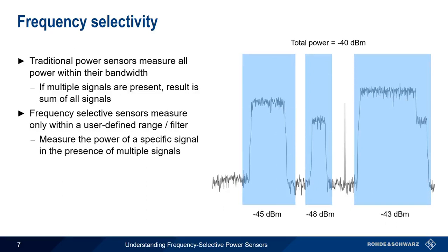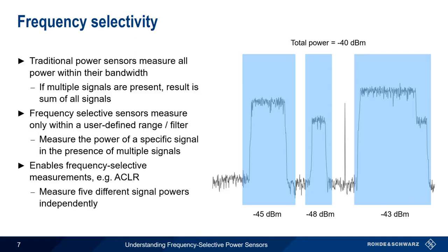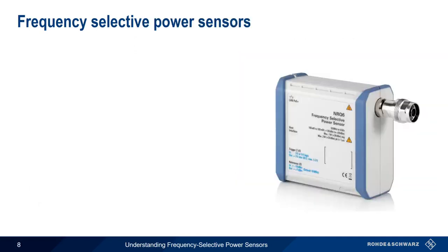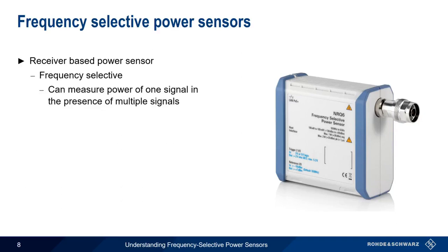Frequency selectivity also enables certain types of frequency selective measurements, such as ACLR, or the adjacent channel leakage ratio, since this measurement requires the independent measurement of five different signal powers. Frequency selective power sensors, such as the Rohde & Schwarz NRQ6, are based on receiver technology. The most important advantage of these receiver-based sensors is that they're frequency selective, which allows measurement of the power of one signal in the presence of multiple signals, and frequency selective measurements such as ACLR.